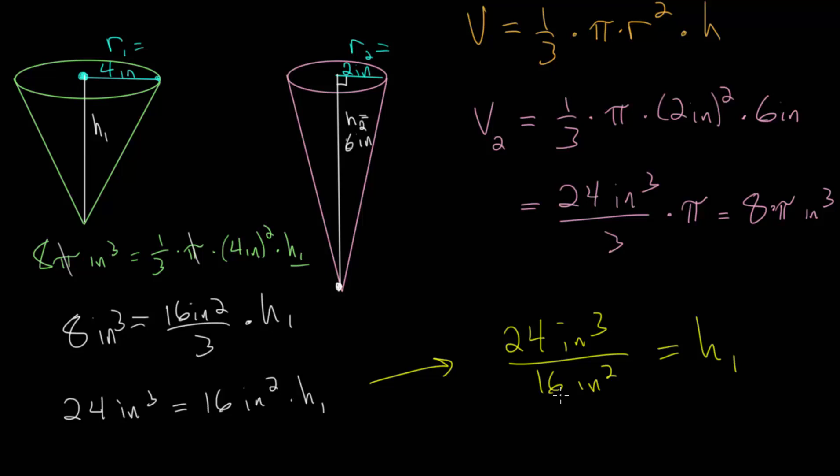24 divided by 16, we can simplify that. They're both divisible by 8, which means this is now 3 over 2 inches. If we want, we can make this a decimal. This is equal to 1.5 inches. So in conclusion, the height of our new cone, which has the same volume as our original cone, is 1.5 inches.